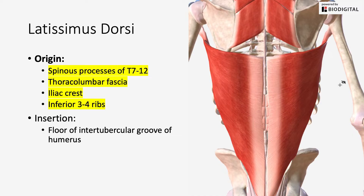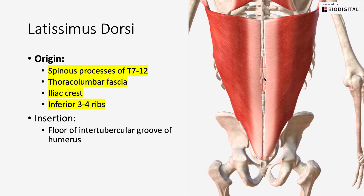Your latissimus dorsi originates from the spinous processes of T7 to T12, and then it's going to attach or blend in with your thoracolumbar fascia, which is not really shown here.